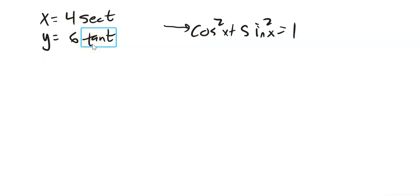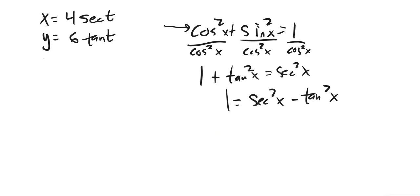And so, let's see. I want a secant and a tangent. Tangent is sine over cosine. Secant is 1 over cosine. So, I'm going to divide everything here by cosine squared. We've seen this move before. So, I know that 1 plus sine over cosine is tangent. 1 over cosine is secant. Subtract the tangent from both sides. So, that's my relationship.